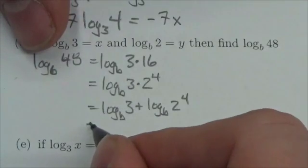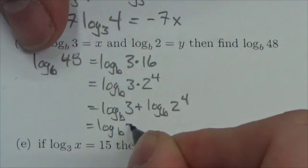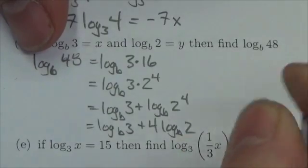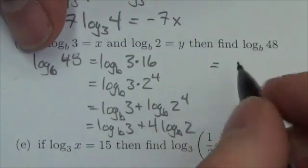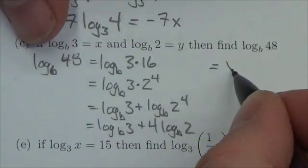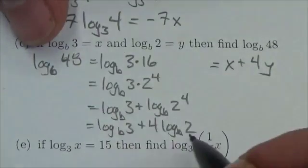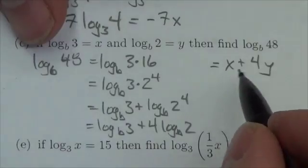So this becomes log base b of 3 plus 4 times log base b of 2. And now I can make this substitution: log base b of 3 is x, and log base b of 2 is y. So the answer is x plus 4y.